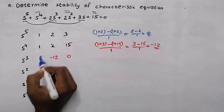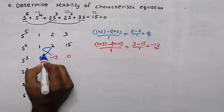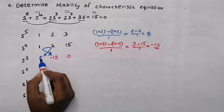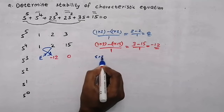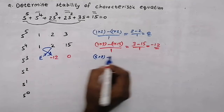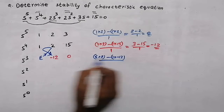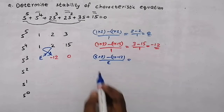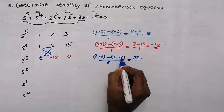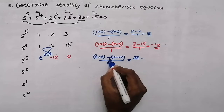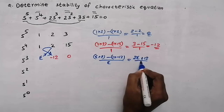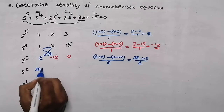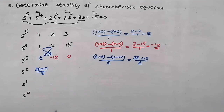So, to do the remaining calculation, we need to substitute 0 with epsilon — the first element with epsilon. We don't want to put other 0s as epsilon; only the first element is epsilon. For finding the next element, we will do the multiplication in this direction: epsilon into 2 minus 1 into minus 12, all divided by the starting element epsilon. So, 2 epsilon minus 1 into minus 12 gives 2 epsilon plus 12, divided by epsilon. So the new value here will be (2 epsilon + 12) / epsilon.